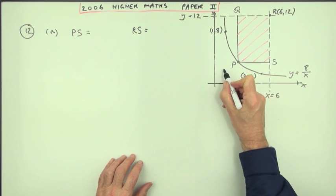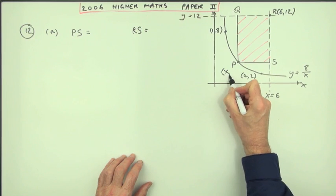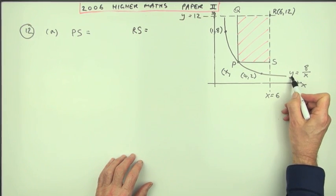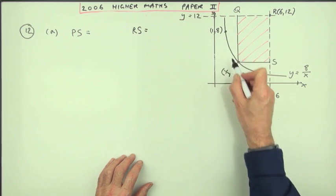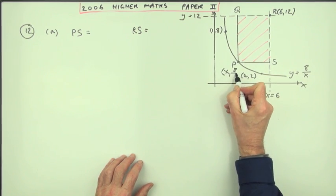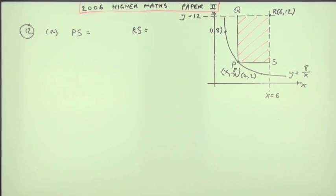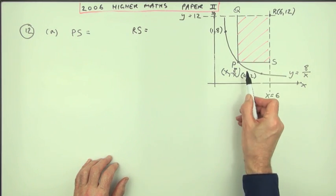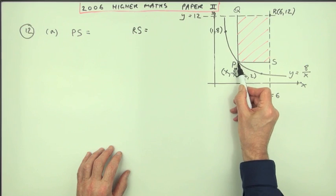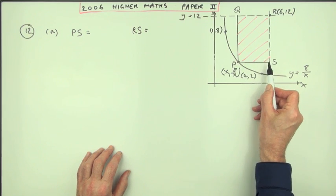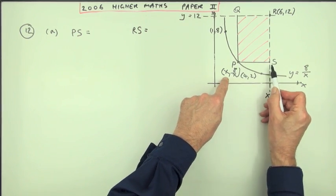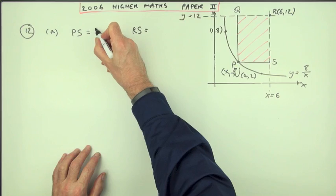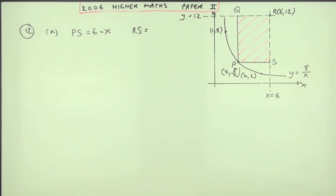Now point P could be any point, so I'll just call that x, and its y-coordinate then has to fit the equation, so the y-coordinate is 8 over x. What are the two sides so you can work out the area? Length times breadth. PS for one mark—well, PS goes from point P to point S, from x-coordinate x to x-coordinate 6, so PS is 6 minus x. That's a mark.